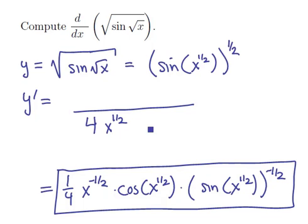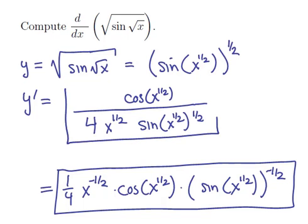and that sine of x to the 1 half to the 1 half on the bottom of the fraction bar. And then we have a lone cosine of x to the 1 half on the top. Either one of these two expressions is an acceptable version for the final derivative.